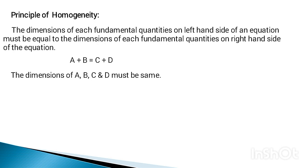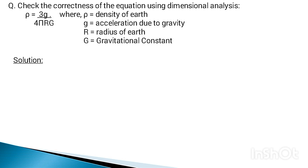Now let's move on to the problem based on dimensional analysis. The problem is to check the correctness of the equation using dimensional analysis. The equation is ρ = 3g/(4πrG), where ρ is the density of Earth, g is the acceleration due to gravity, r is the radius of Earth, and G is the gravitational constant.